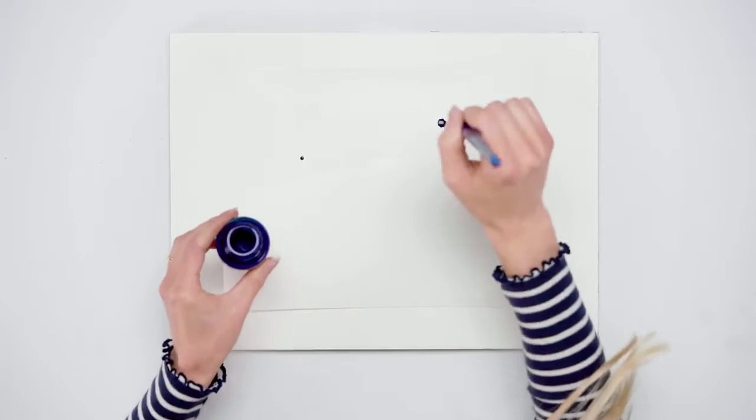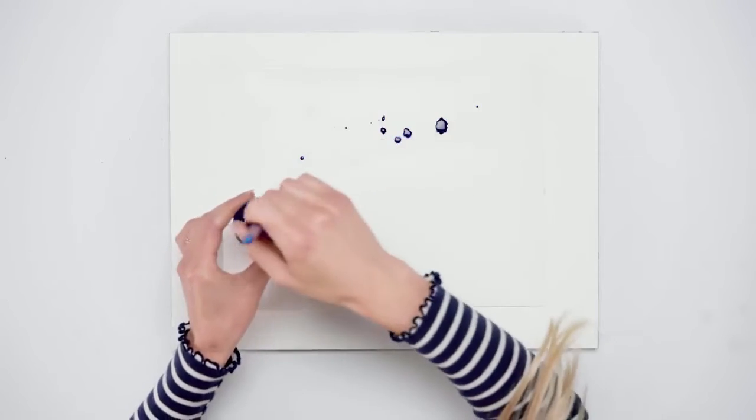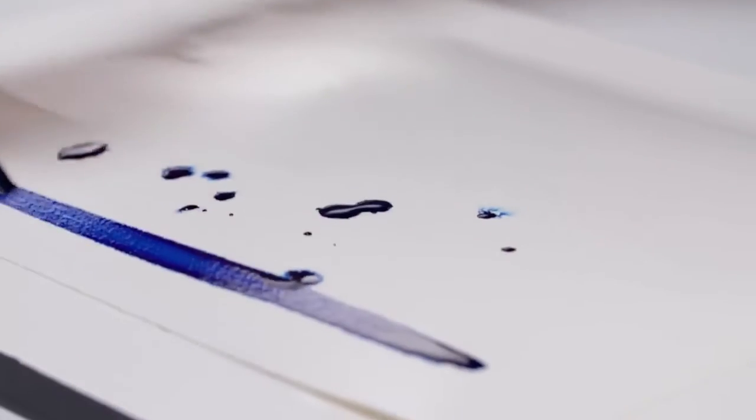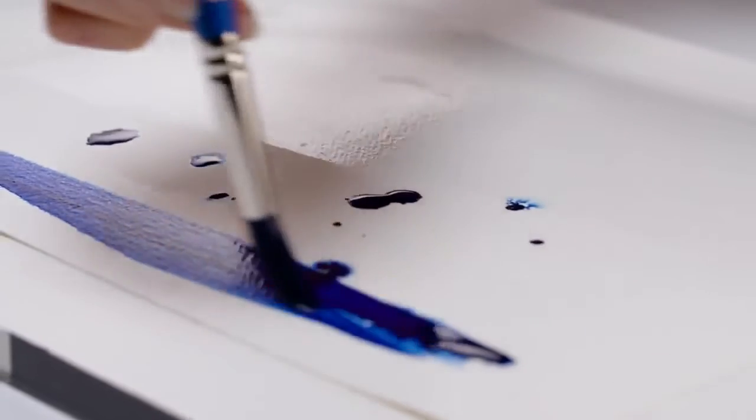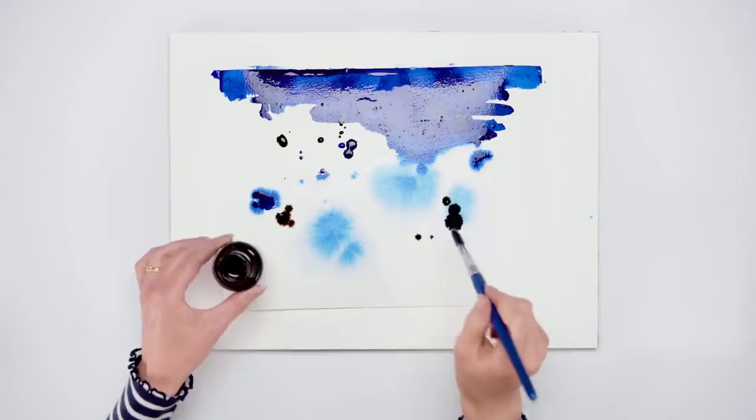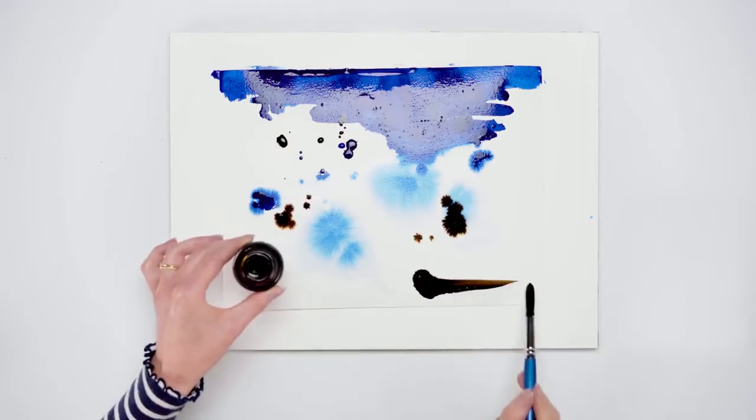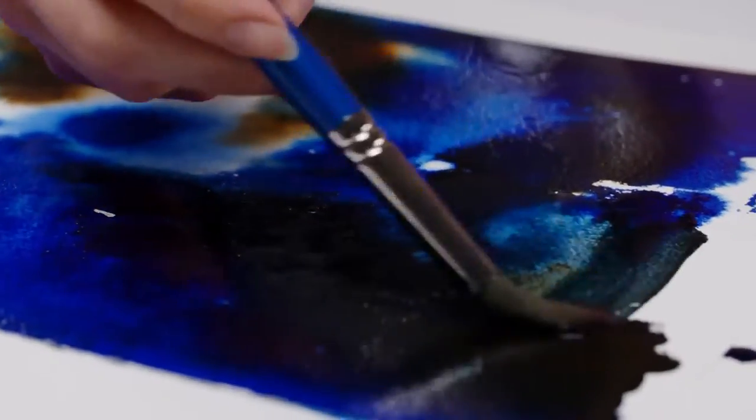Now I'll drop in dark blue and sepia Winsor & Newton calligraphy inks and let them settle on the page. I'm tipping the surface slightly to allow the inks to run into each other.